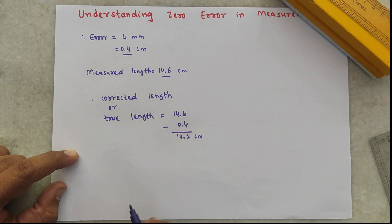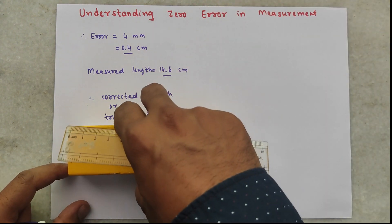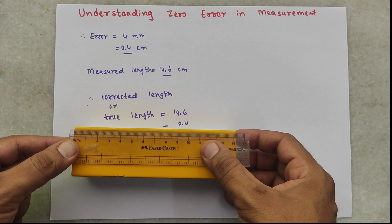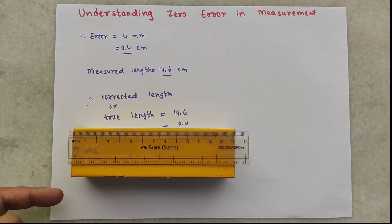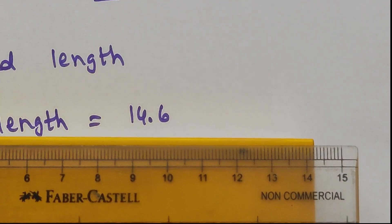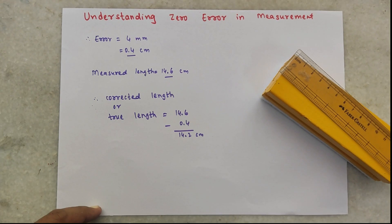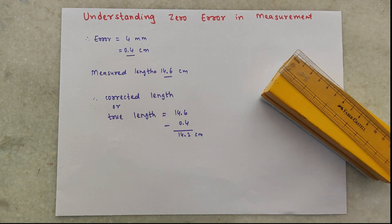This is the true length of the duster. Now let us verify this using our perfect scale. If I take the perfect scale and align one end of the duster with the zero mark, and look at the reading of the other end — as you can see, the measurement of the other end of the duster is exactly 14.2 centimeters. That means our measurement is now precise and accurate, even though we used the broken scale.